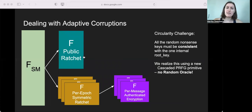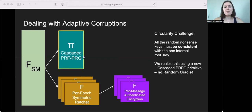Finally, we sketch the issue of realizing these functionalities under adaptive corruptions. So let's start with a public ratchet. To realize the ideal functionality against an adaptive adversary, all of those random nonsense keys that we gave out need to be consistent with the true internal root key that is used to generate the message chain keys. One easy way of guaranteeing the consistency while also providing adaptive security is to use a random oracle to model this public ratchet. However, instead, we introduce a new primitive that we call the cascaded PRFG. It can be constructed from puncturable PRFs and it allows us to simulate adaptive corruptions. So see the paper for more details on this interesting primitive.